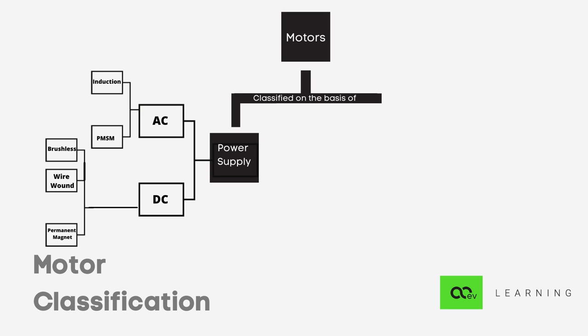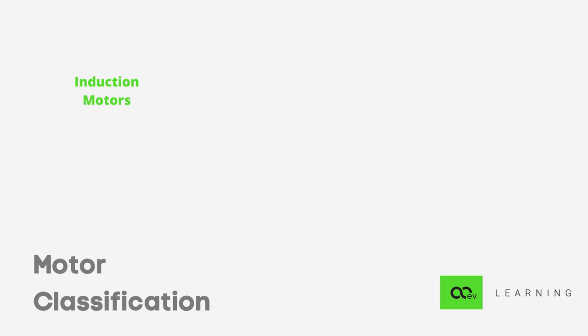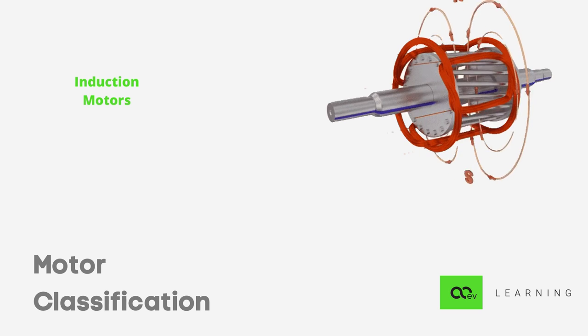In case of AC motors, there are majorly induction and PMSMs. In an induction motor, conductors are bound across the length of the rotor.